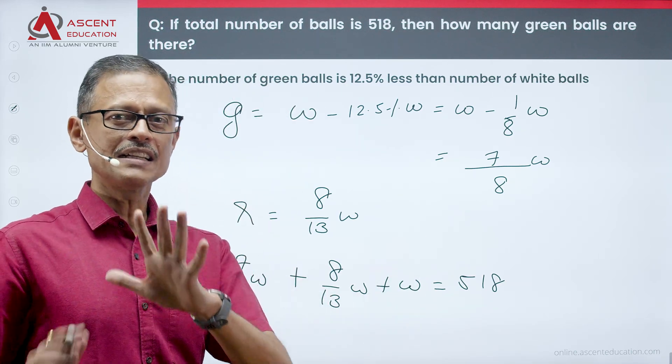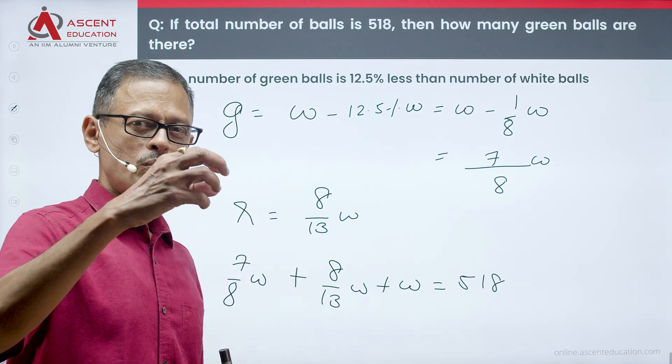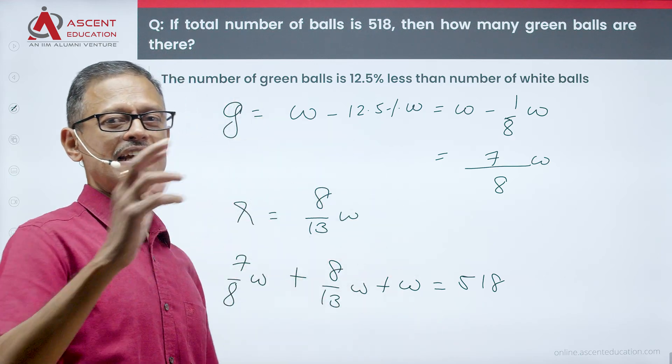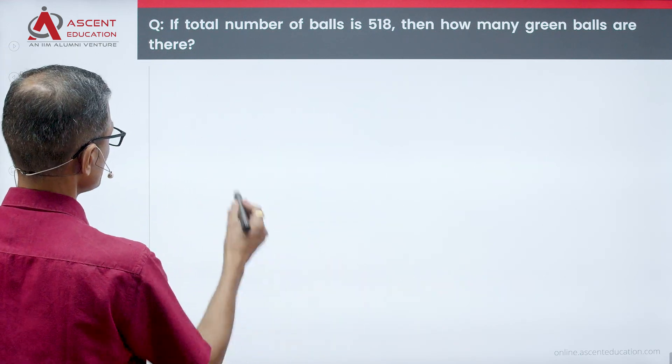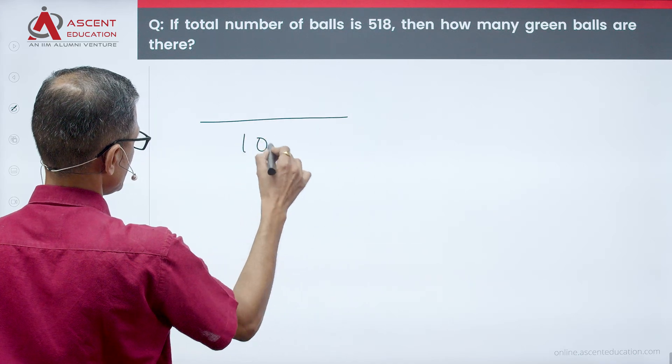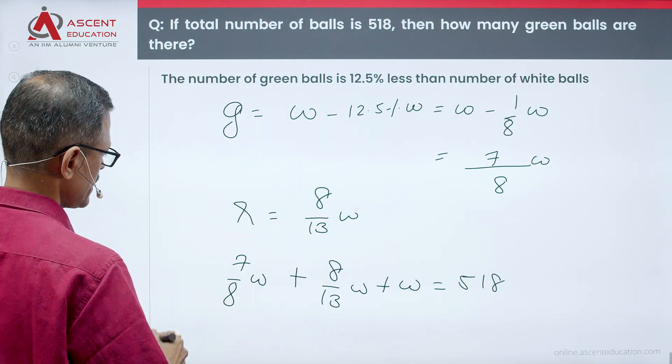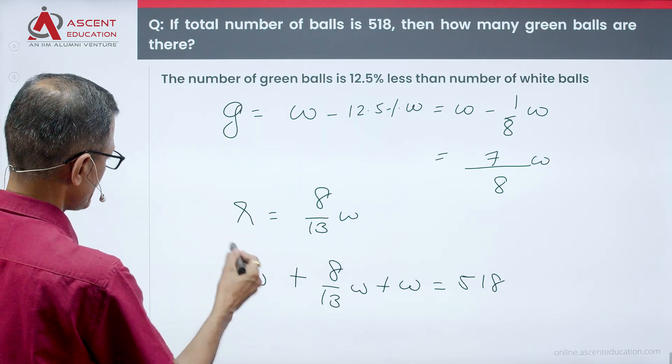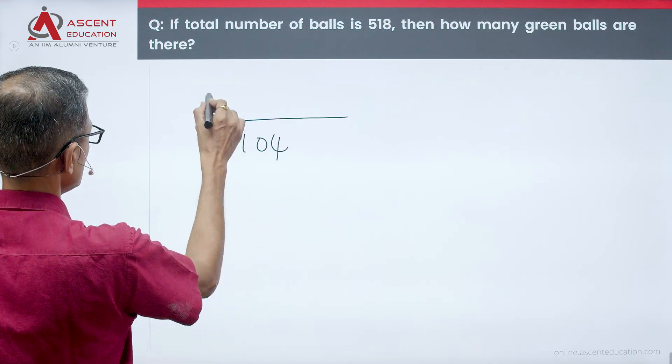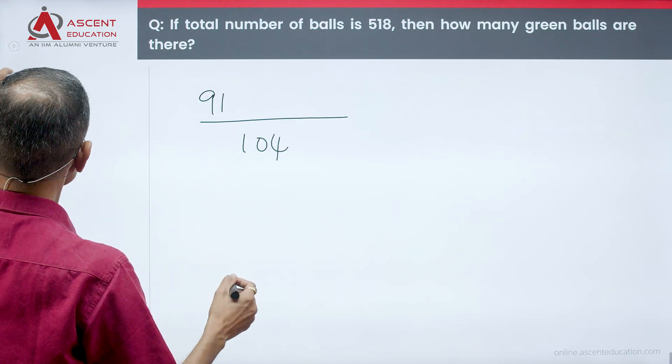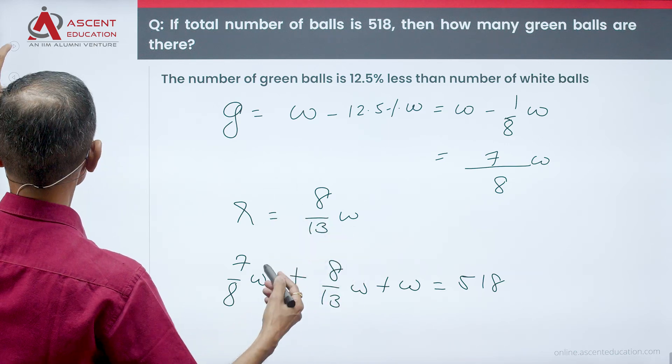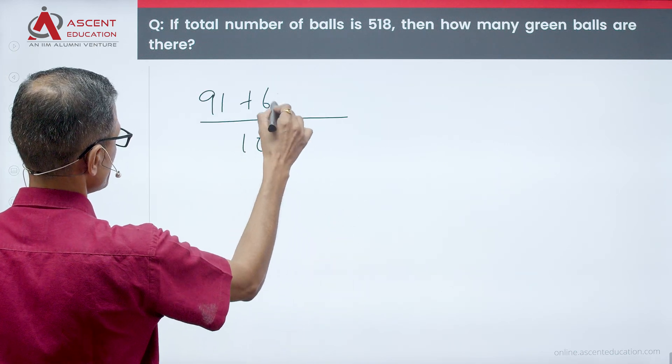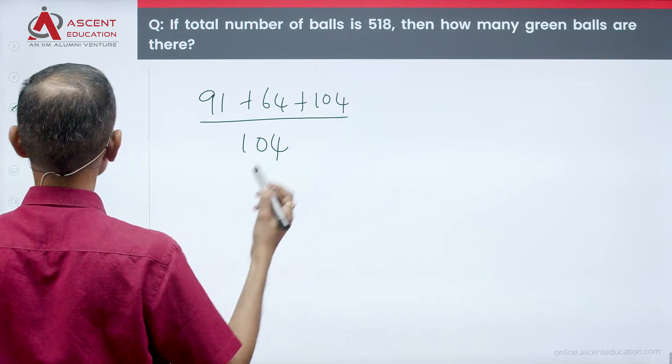G is equal to 7 by 8W, R is equal to 8 by 13W, plus W is equal to 518. If we cross-multiply, because white seems to be the link between green and red. 8 and 13, common denominator is a product of those two, which is equal to 104. Denominator is 104. If we cross-multiply, 7 by 13 is equal to 91. We have 8 by 8, which is plus 64 plus 104.